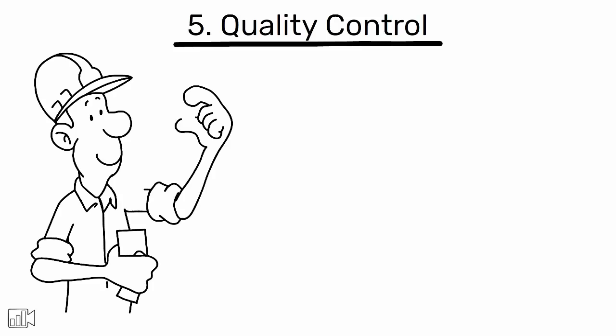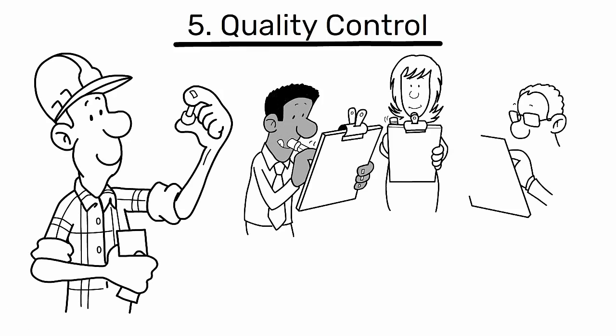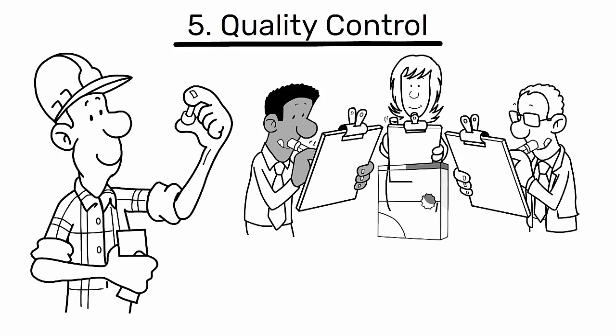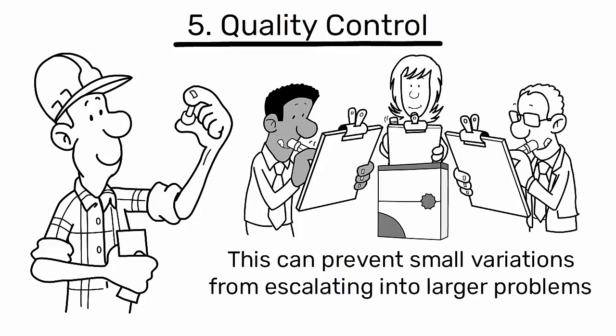5. Quality control: implement robust quality control measures to quickly identify and correct defects. This can prevent small variations from escalating into larger problems.